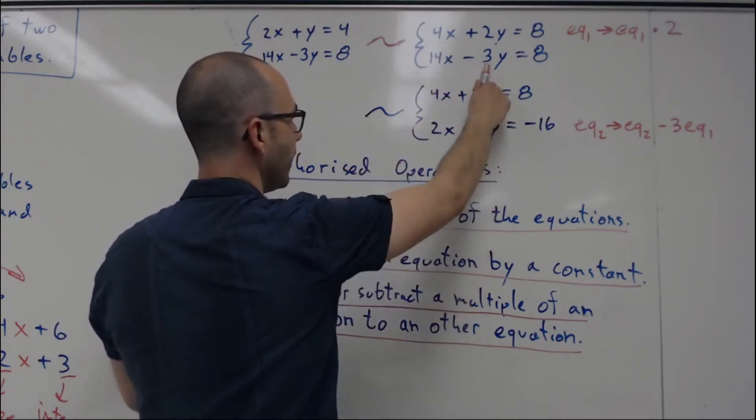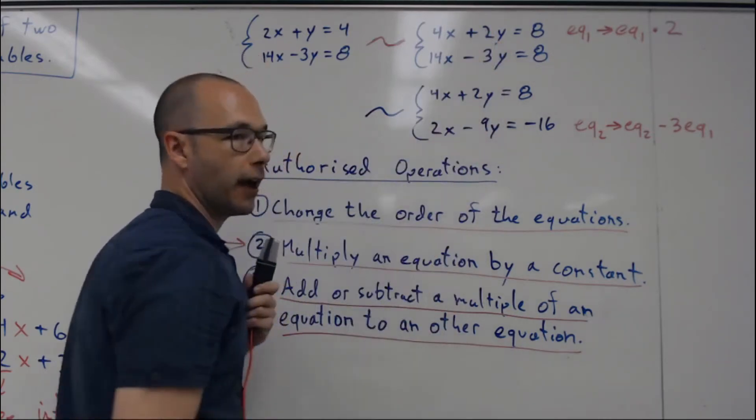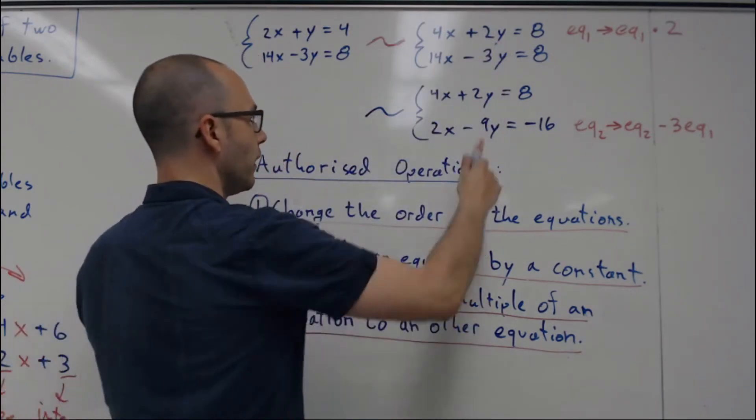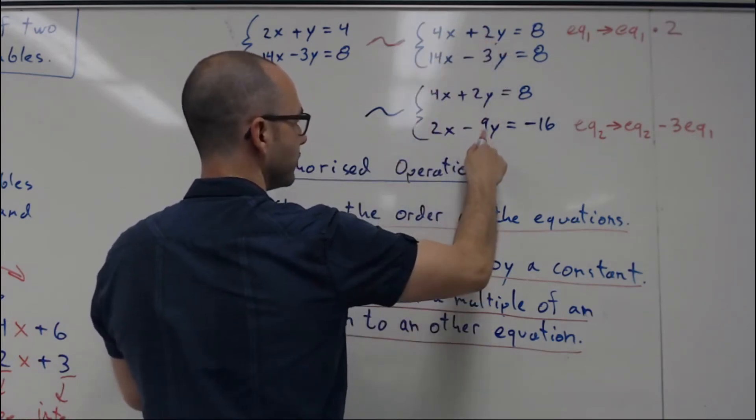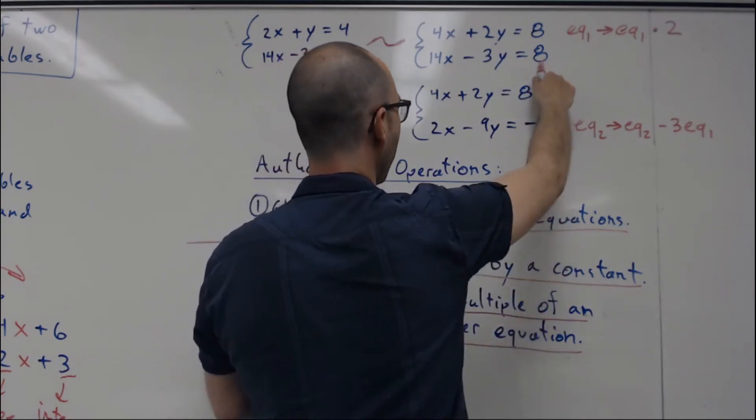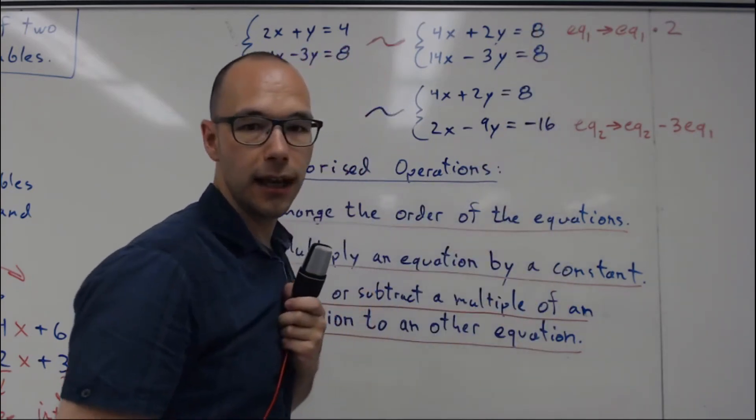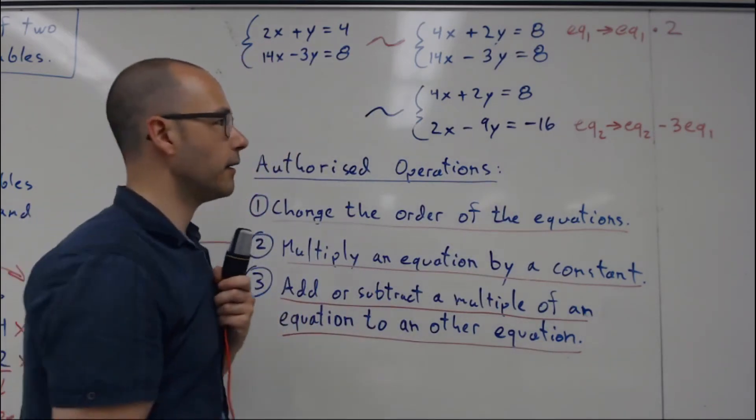Then I take that negative 3 minus 3 times 2. Negative 3 minus 6 is going to be negative 9. And then I do the same thing for my constant here. 8 minus 3 times 8 is going to be negative 16.